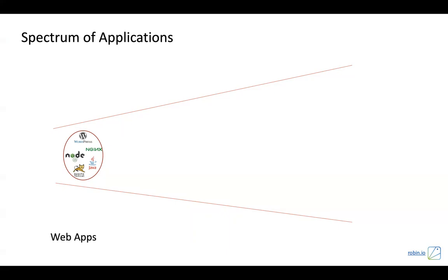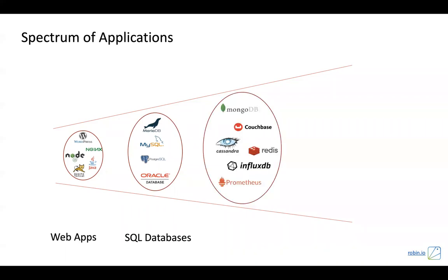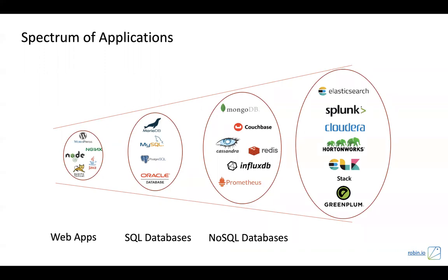We start with the smaller bucket, which are built as microservices typically — more than web apps, they could be application services. The second bucket is our traditional SQL databases, which could be MariaDB, Oracle, SAP HANA, etc. The third spectrum is databases built in the last decade, which fall into NoSQL — distributed databases. And the big bucket is big data applications: Hadoop, Kafka, Elasticsearch, and ELK stacks. This is application classification — microservices, monolithic applications, databases, NoSQL.